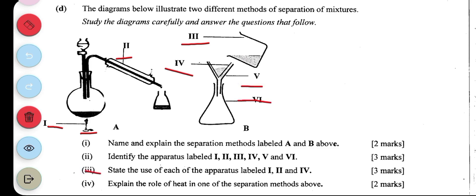State the use of the apparatus I, II, and IV. The Bunsen burner is used to heat up the liquid mixture in the round bottom flask.